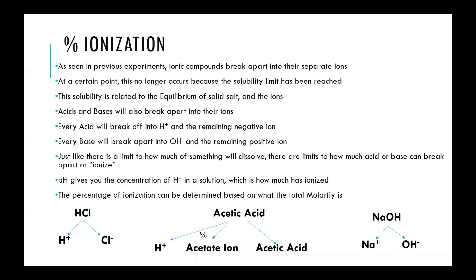Another measurement in acid-base chemistry is percent ionization. When compounds dissolve in water, they break apart into their separate ions up to a point — different salts have a solubility limit. The same is true with acids and bases: some acids and bases put in water will 100% break apart into their ions, giving 100% ionization. But not everything fully breaks apart right away; those would be called weak acids or weak bases.